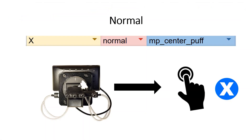The first output function is the normal output function. This is the simplest one to understand because it just acts like a normal control. For example, if I set the X button to be activated normally via the center sip and puff, the button will activate like a normal controller button would — active while blowing in, and released when I stop.